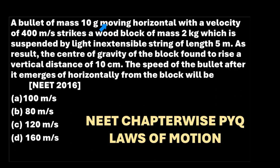A 10-gram bullet moving horizontally with a velocity of 400 meters per second strikes a wooden block of mass 2 kilograms, which is suspended by a light inextensible string of length 5 meters. As a result, the center of gravity of the block is found to raise a vertical distance of 10 centimeters. The speed of the bullet after it emerges horizontally from the block will be?